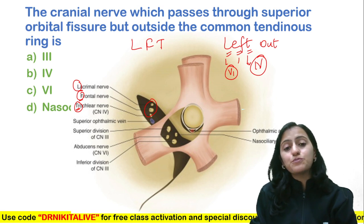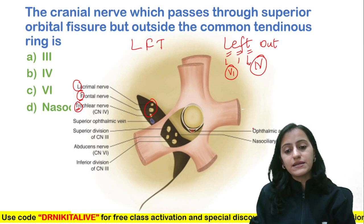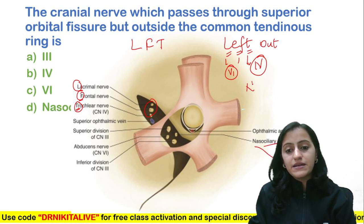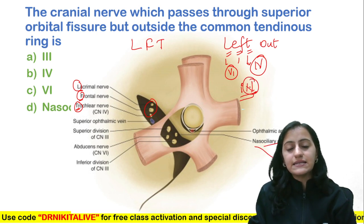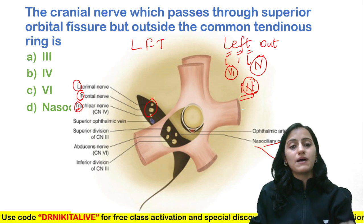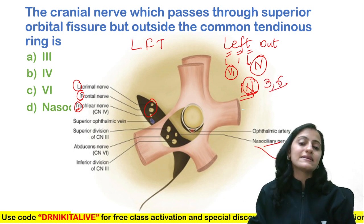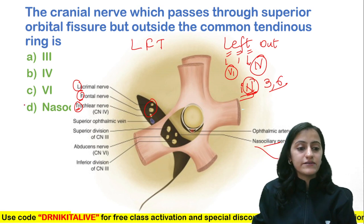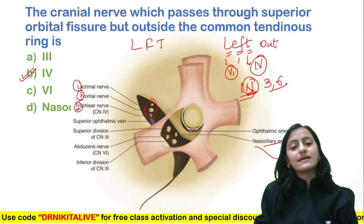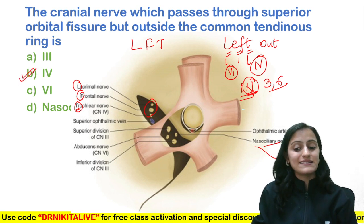Which branch of the ophthalmic nerve is within the common tendinous ring? That is nasociliary — nasociliary is in. So within the common tendinous ring part of the superior orbital fissure is the nasociliary, the third, and the sixth nerve. So it is the fourth cranial nerve which is outside the common tendinous ring.